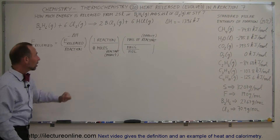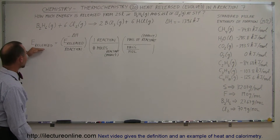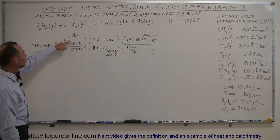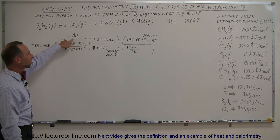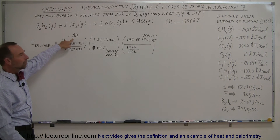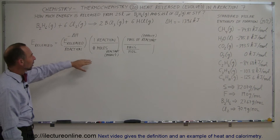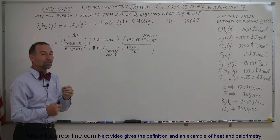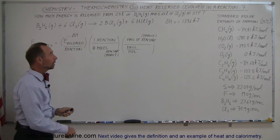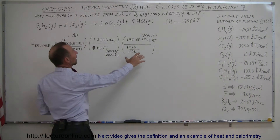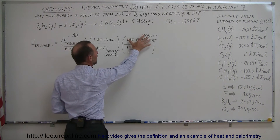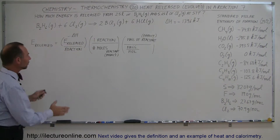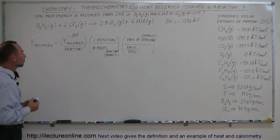We have the standard equation here. Energy released is equal to the energy released per reaction — that's the negative of delta H — times one reaction divided by the number of moles of the reactant, then times the mass of the reactant divided by the molar mass of the reactant. That gives us the energy released.